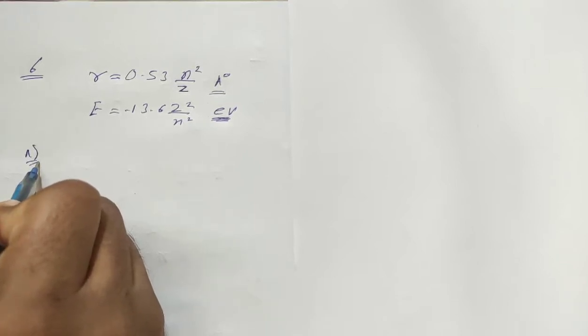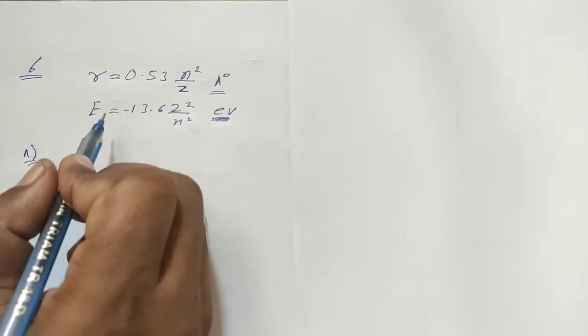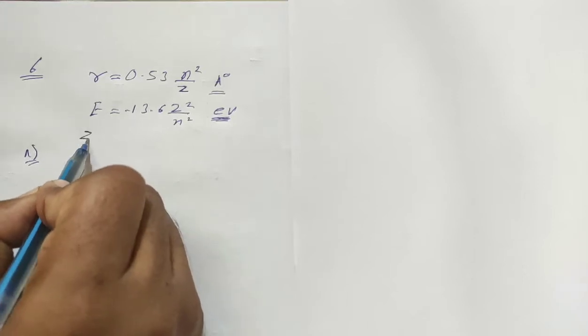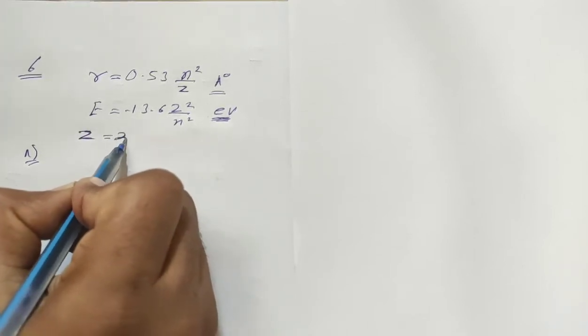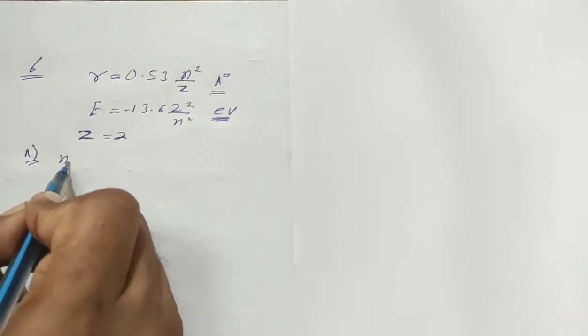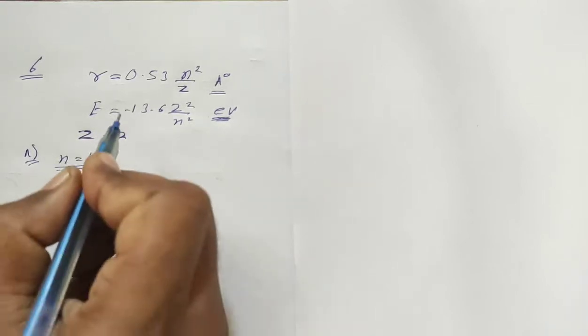Next, what is the first part? For helium, z is fixed and the value is 2. First, for n equals 1, what is the radius?